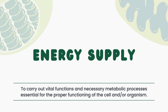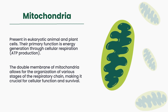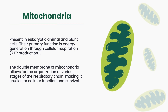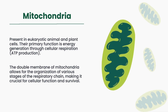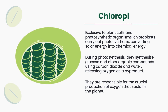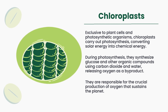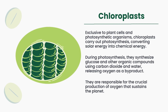Cells require energy to carry out vital functions. Mitochondria are responsible for energy generation through cellular respiration. Mitochondria produce ATP through cellular respiration, providing energy for cellular activities. They are found in eukaryotic animal and plant cells. Chloroplasts are exclusive to plant cells and perform photosynthesis, converting solar energy into chemical energy. They produce oxygen essential for life.